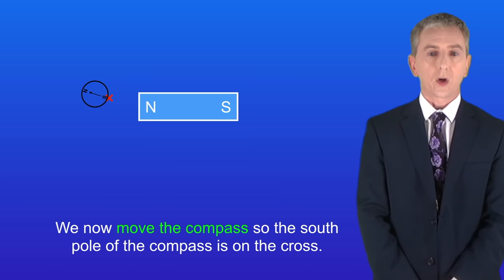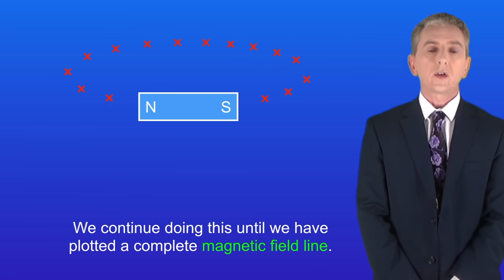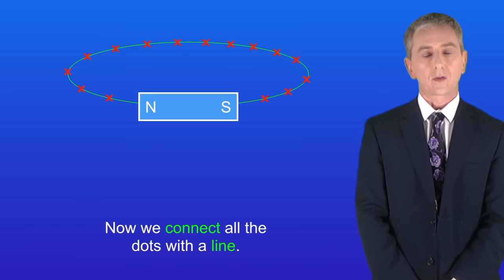We now move the compass so the south pole of the compass is on the cross. And again we draw another cross at the north pole of the compass. We continue doing this until we've plotted a complete magnetic field line. Now we connect all the dots with a line like this.